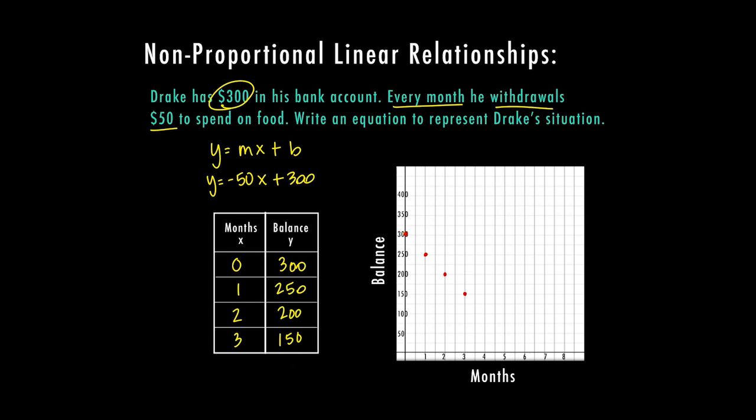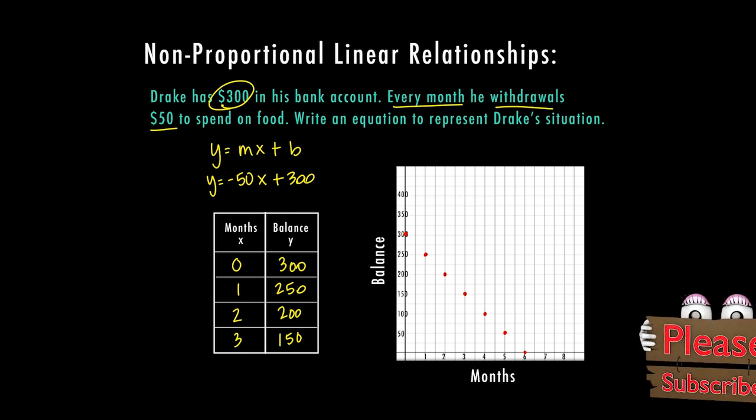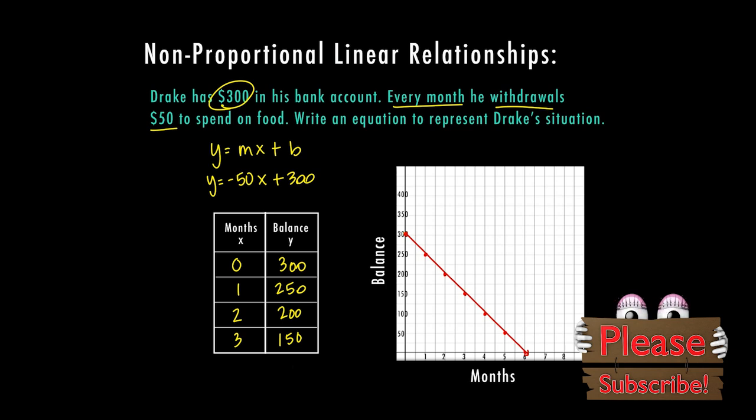Now this is solely based on the information we have. We don't have information that he's depositing money. All we know is he has $300, he's going to withdraw $50 a month to spend on food. A question that might go along with one of these problems would be how many months would it be till he runs out of food? Well, if we continued here, at four months he would have $100, at five months he would have $50, so at six months he would be out of food.